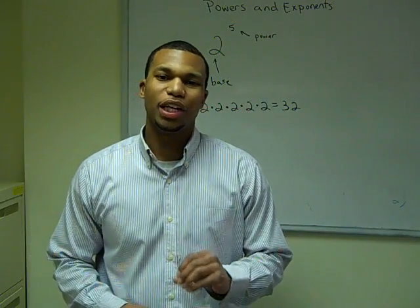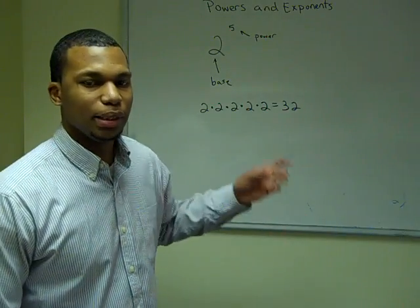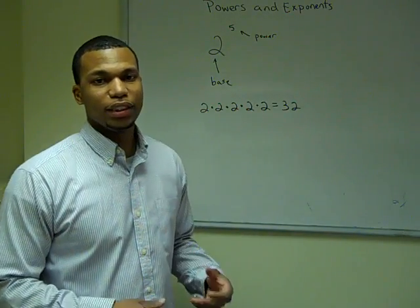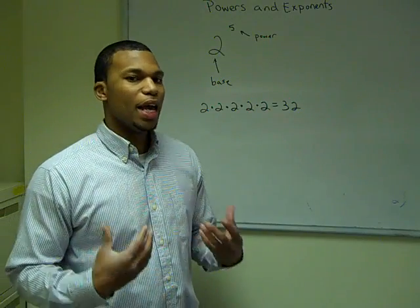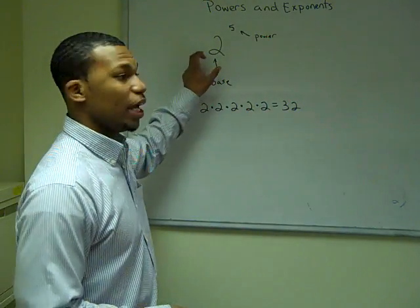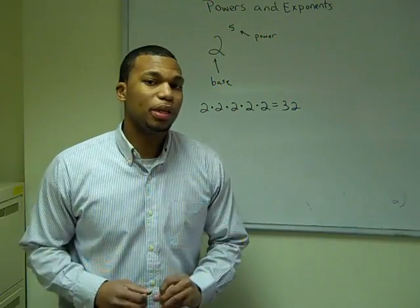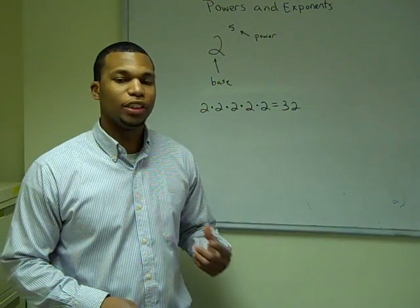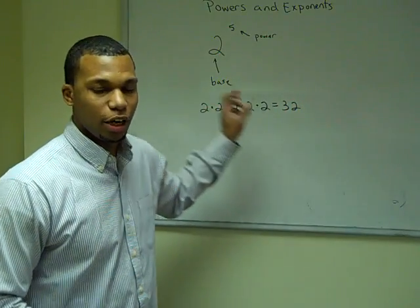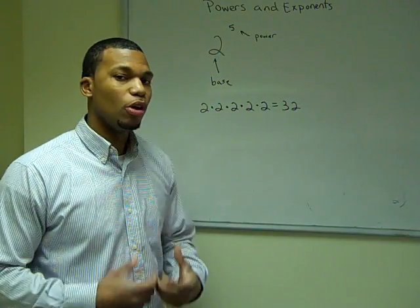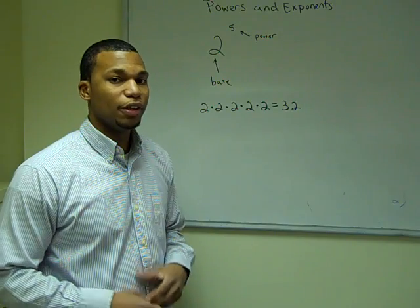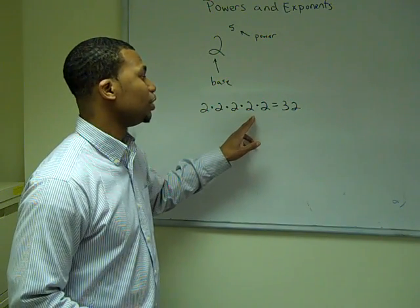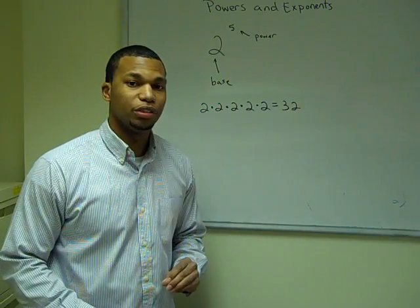In powers and exponents, the base is the bottom number, and the exponent, or the power, is the top number. In an exponent, we take our base and we multiply it by how many times the power says. So for example, if we had two raised to the fifth power, we're going to take our base two and multiply it by itself five times. So two times two times two times two times two is equal to thirty-two.